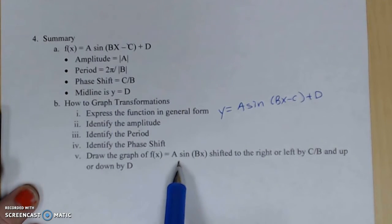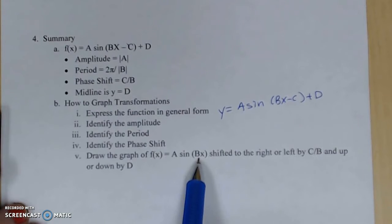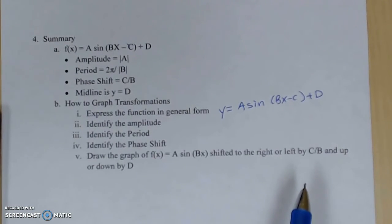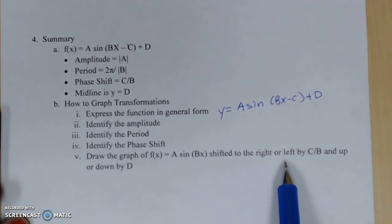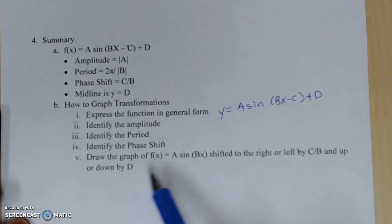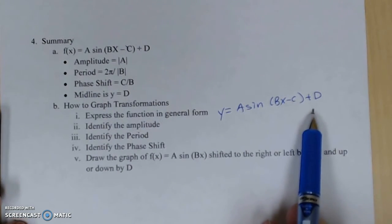You want to first draw your graph dealing with your A's and B's because we know that that reflects possibly your reflection in the graph, your amplitude or period changing, and then apply your shift to the right or left and up or down. Putting all these steps together, you can graph these along the way.